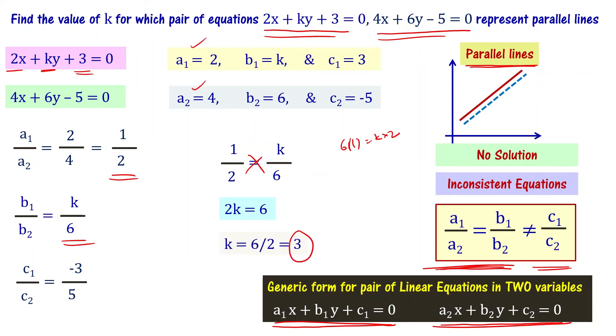k equal to 3 is the answer. So the equations become 2x plus 3y plus 3 equal to 0 and 4x plus 6y minus 5 equal to 0. Understood? Thank you.